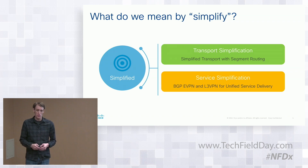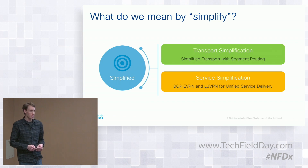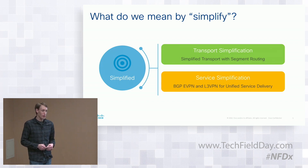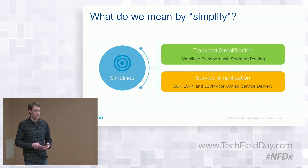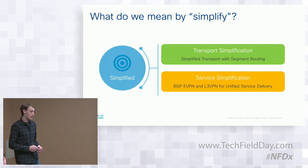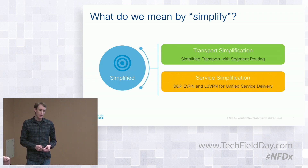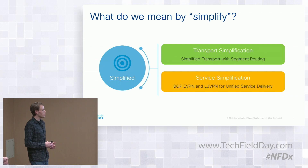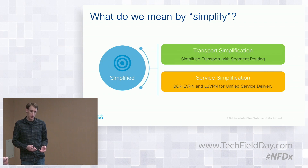This is the simplification story. Transport simplification is really segment routing — it's about eliminating protocols from the network while adding features. That's the key to segment routing: you're not really losing anything; you're actually gaining functionality while reducing protocols in the network. And then service simplification through EVPN: getting rid of other protocols like LDP-based signaling and BGP-based signaling for VPLS and replacing all layer two services with EVPN, while still using layer three VPN for layer three service delivery.